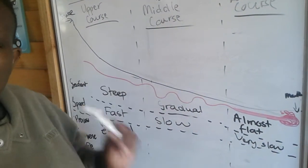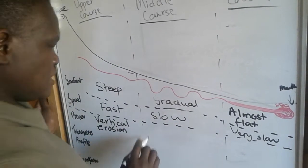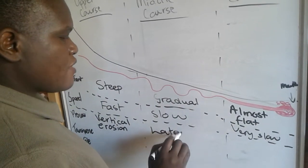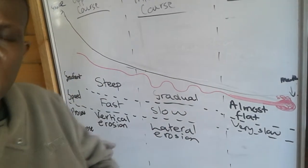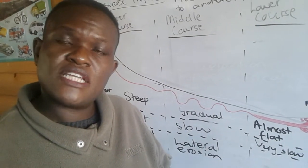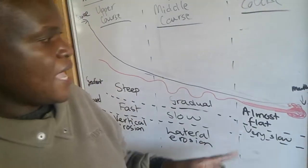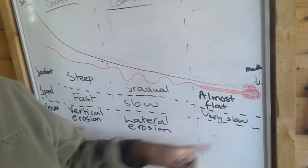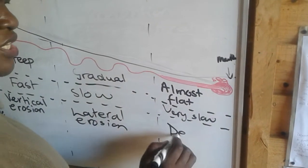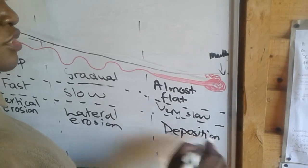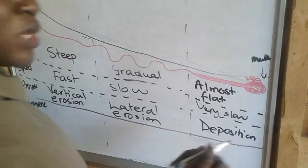As you reach the middle course, because of the gradual gradient, the river now experiences lateral erosion. Lateral erosion is whereby the river is now eroding at the banks. As you go towards the mouth, the river is very flat, so you would expect deposition of material.